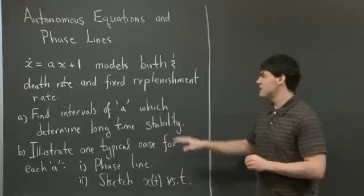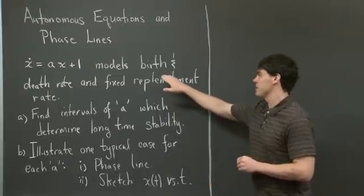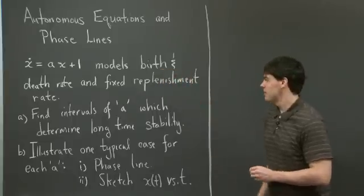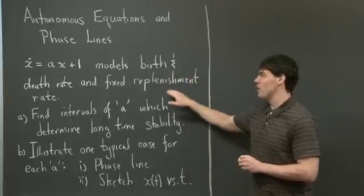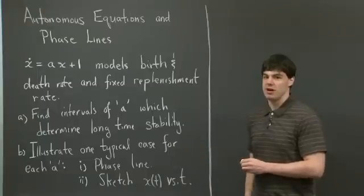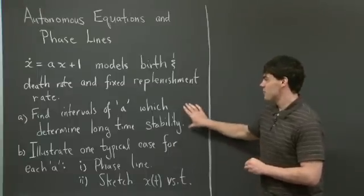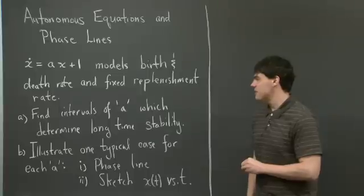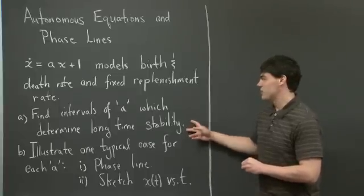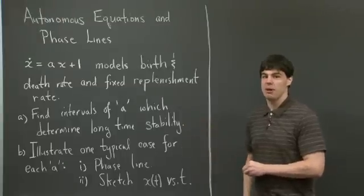In this case, the variable a represents births minus deaths in a population, and 1 represents the constant input of new creatures. For part A, we're asked to find intervals of the variable a which determine the long-time stability of the population.